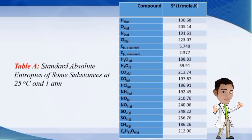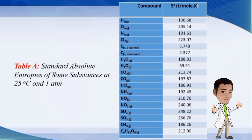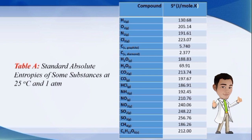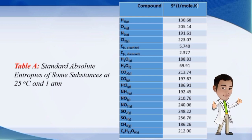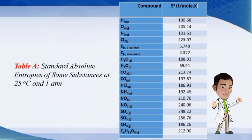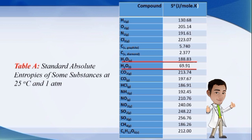The exact entropy change for any process can be determined in the same way as the entropy change for the reaction, using standard absolute entropies at 25 degrees Celsius and one atmosphere instead of entropies of formation. Just be mindful of the states of a particular element or compound. For example, the standard absolute entropy of water in the gaseous state differs from that of water in the liquid state, which are positive 188.83 and 69.91 J/mol·K respectively.